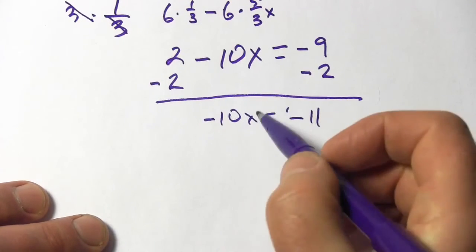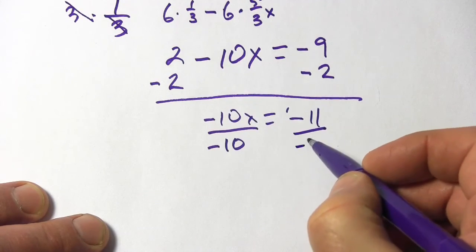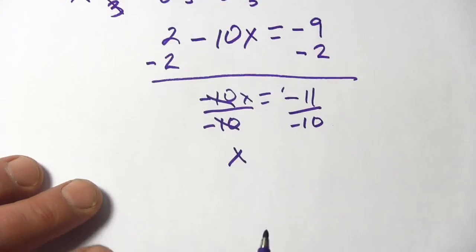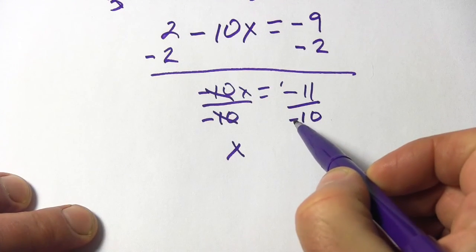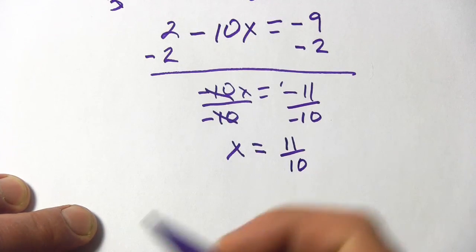And now I've got x multiplied by a negative 10. So to undo that, we need to divide by a negative 10. Those cancel and we just get x. A negative divided by a negative is going to be a positive. So this is a positive 11/10.